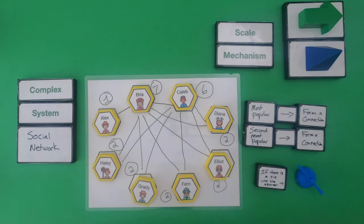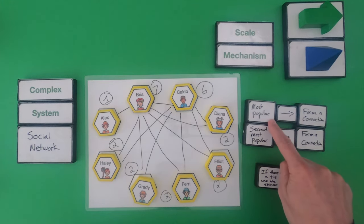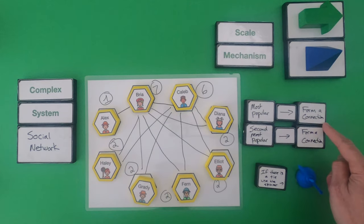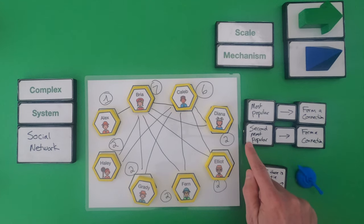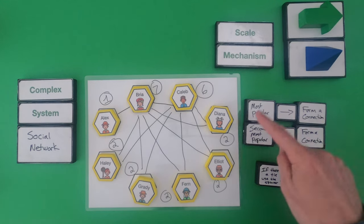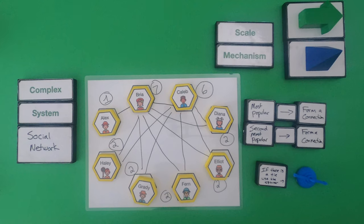So the rules that I got is when you join you find the most popular person. In this case, it would be Bria. And then you just form a connection with them. Then you form your next connection with the second most popular and you form a connection. Now this is how social networks form. You're more likely to connect to somebody who has more connections. There is a tie breaker. If there is a tie between who is second most popular, then you would use the spinner. And so what we've got is just a scale mechanism, a simple set of cause and effect rules that lead to this more complex system.